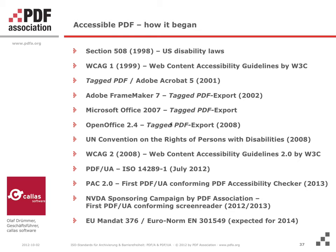Microsoft followed in 2007, offering tagged PDF export as part of Microsoft Office — Word, Excel, PowerPoint, and later Publisher. From my point of view, this is a kind of surprise, because at that time Microsoft was not necessarily a promoter of PDF — they were even thinking about pushing XPS, their internal printing architecture language. But I think they just realized that PDF is so widely used as an exchange format, especially for the final form of a document, so it was probably a good idea to support it in Microsoft Office. OpenOffice followed in 2008 and also started offering tagged PDF export.